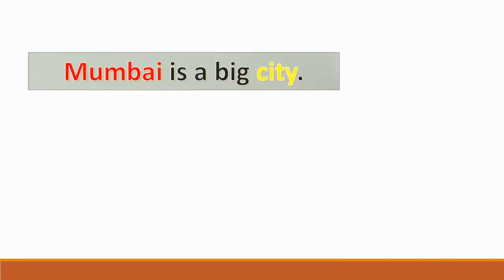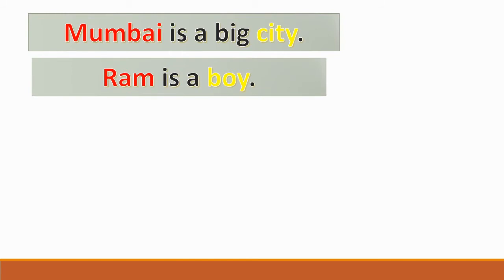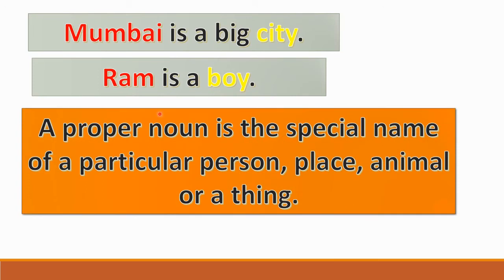Another rule: 'Mumbai is a big city. Ram is a boy.' You can see Mumbai and Ram are written in a different color — these are proper nouns. City and boy are common nouns, written in lowercase. So the next rule is: a proper noun is a special name of a particular person, place, animal, or thing, and will come in capital letter. M in Mumbai and R in Ram are written as capital letters. Common nouns come in lowercase.